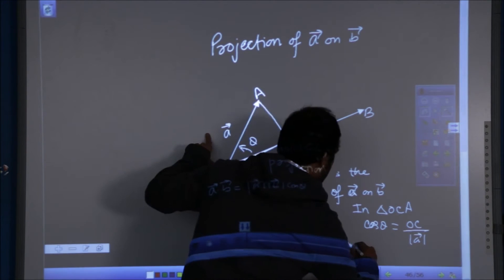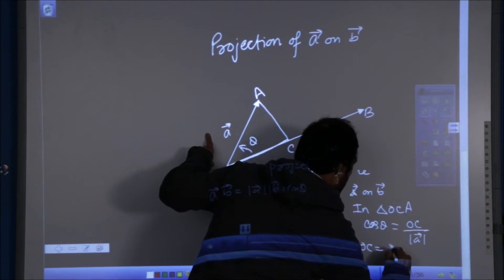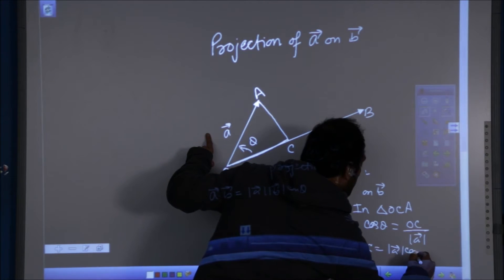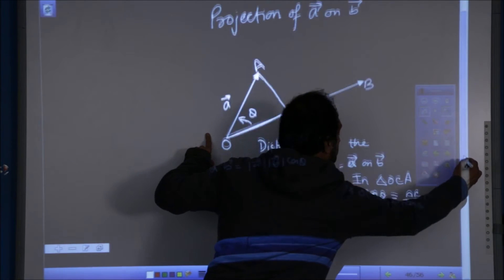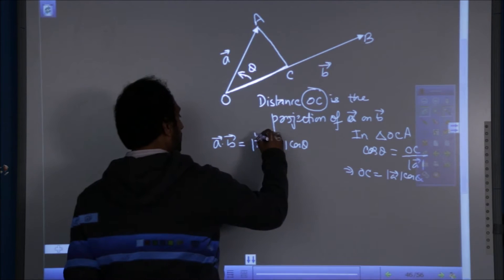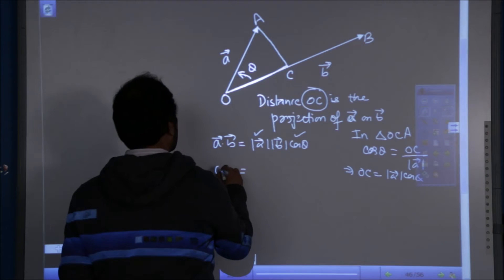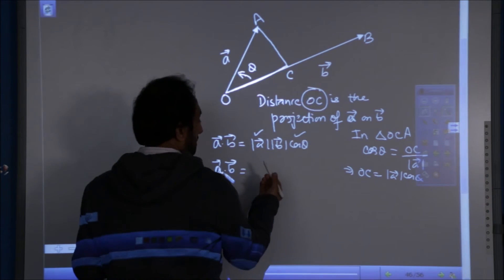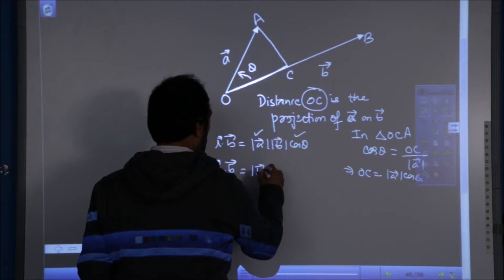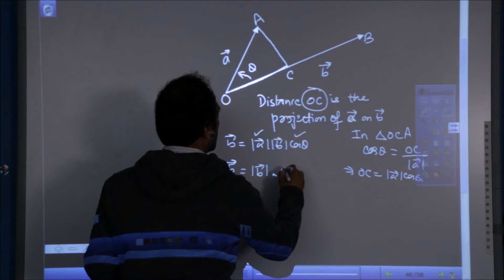What is OC? mod A cos theta. So if I replace mod A cos theta with OC, then we will be getting an expression that A dot B is mod B into OC.